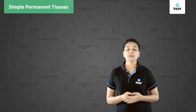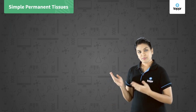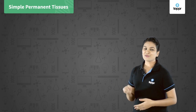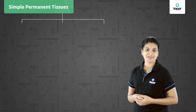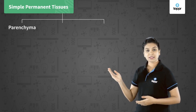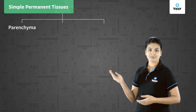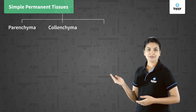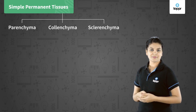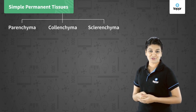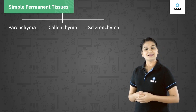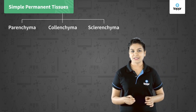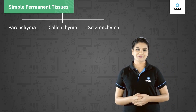Simple permanent tissues are further divided into three categories: parenchyma, colenchyma, and sclerenchyma. Let us see them one by one in detail to understand them.